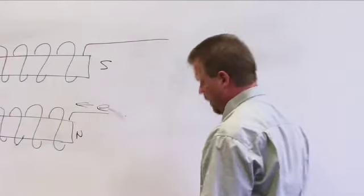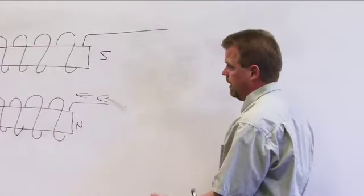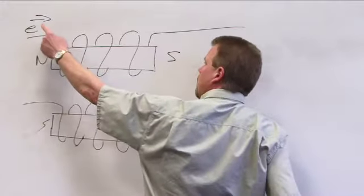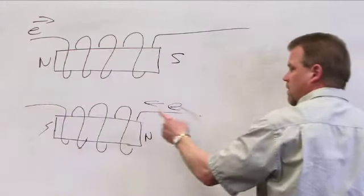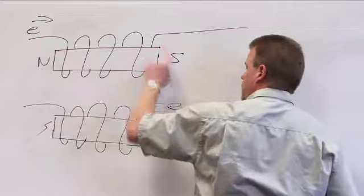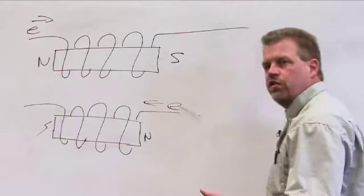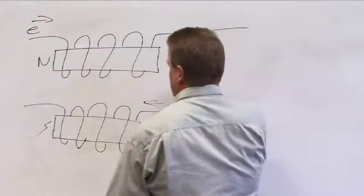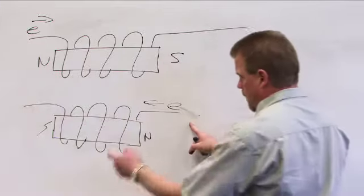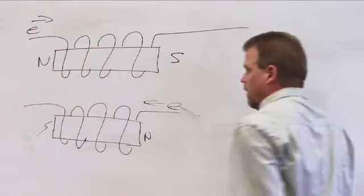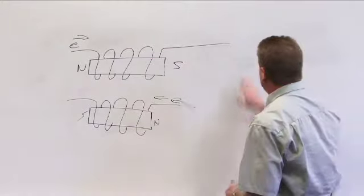Let's try this wrapping the other way. The point I'm making to you is this: when you change electron flow direction, left to right, right to left, you reverse the magnetism. We had north, south, left to right, but right to left, we had south, north.